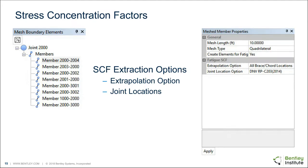In the joint mesh utility, if you click on a member brace and look at the meshed member properties on the right-hand side of the screen, you'll note some new options. We have a 'Create Elements for Fatigue' toggle — a yes/no option. When you turn that on, it's going to add options for fatigue SCF extraction, including different extrapolation options and joint location options. It will also generate some additional files whenever you mesh the joint.